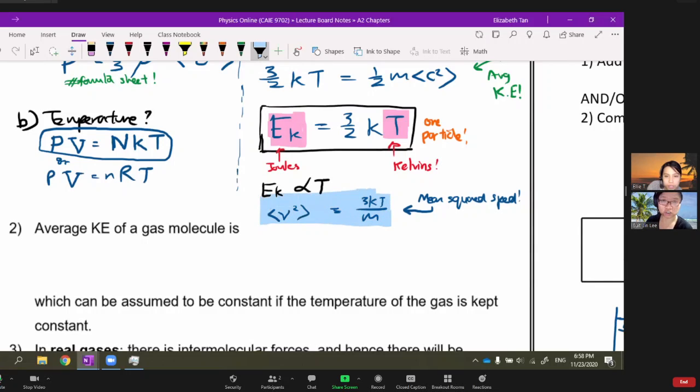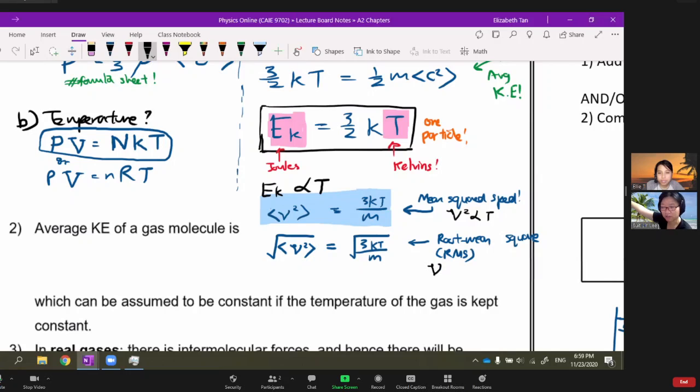If v² is proportional to T, you also need to think about this because sometimes they will trick you - they will use root mean square. Root mean square means you square root the v². You square first, then take the mean, then root - like standard deviation if you do stats. So your v_rms or c_rms is proportional to √T. Do not forget the square root.